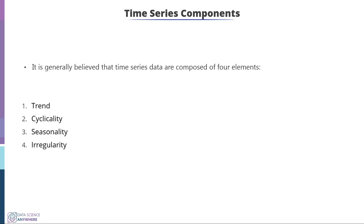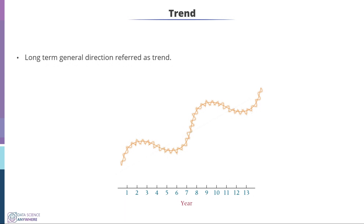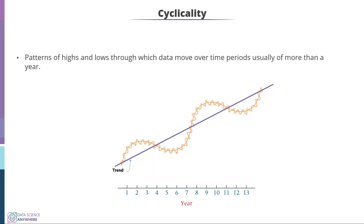Trend — the long-term and general direction — is known as trend. If you look into the figure shown, which is 13 years of data, the time series data is not continuously increasing or decreasing; it is following some cyclic trend. The cycle is repeating every eight years, but overall the data on average is increasing. Such a line is called the trend in the data.